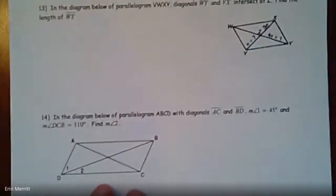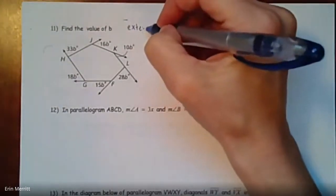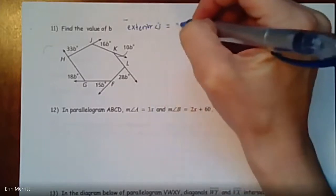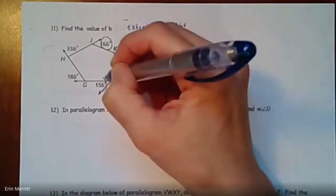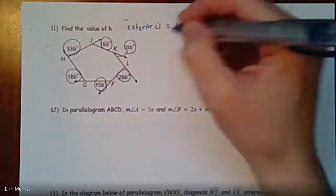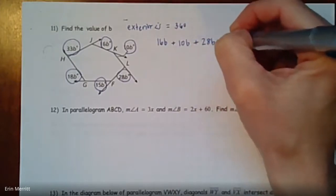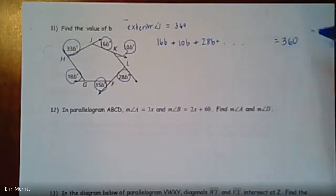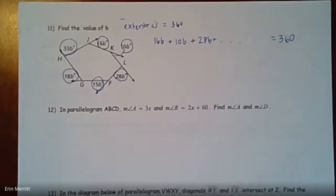For number 11, these are all exterior angles, which means they add up to 360. Set up this angle plus this angle plus this angle, all the way around, equal to 360. Make sure you recognize that if angles are on the outside it's 360; if they're on the inside you have to calculate what that sum could be.